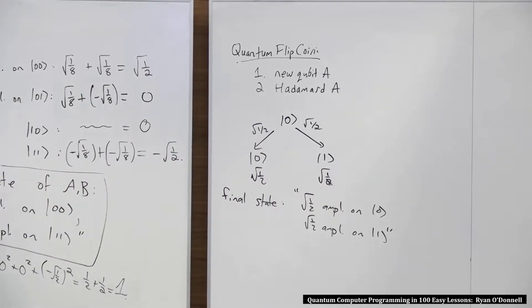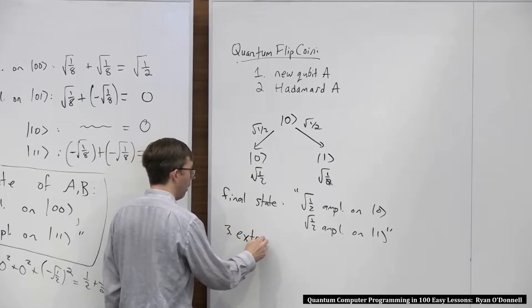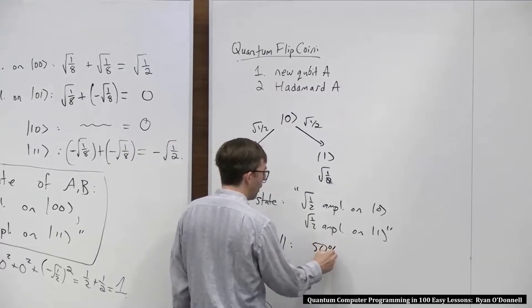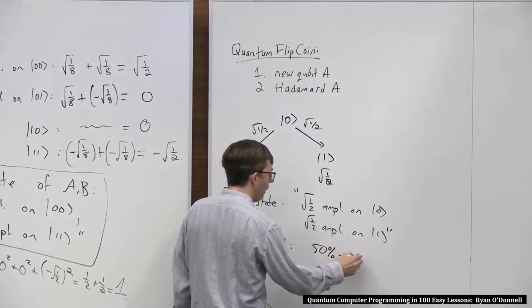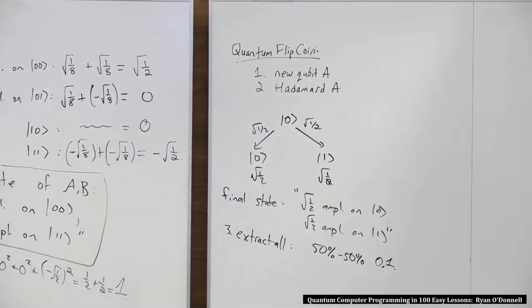And if we were to, now, hypothetically do extract all, it would be 50-50 whether we got 0 or 1. So from outsider's perspective, you run this code, it ends with extract all, it just half the time prints 0, half the time prints 1.